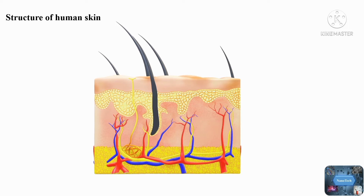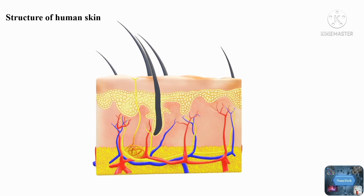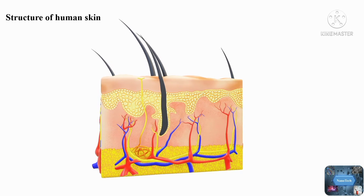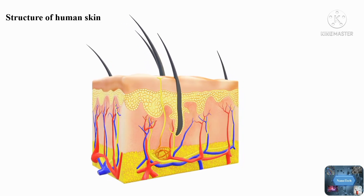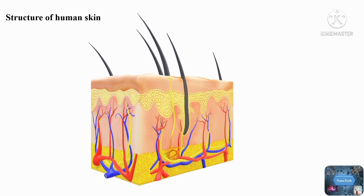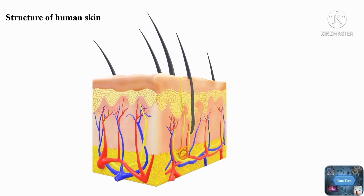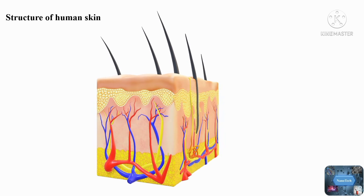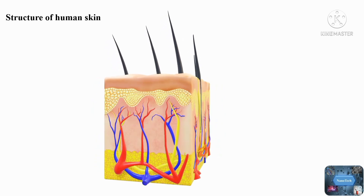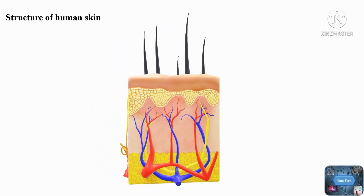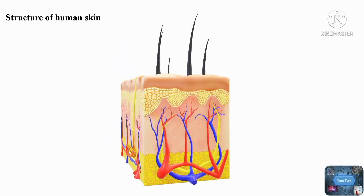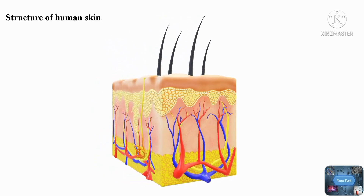The topmost layer is the epidermis. The epidermis is further subdivided into five layers: the stratum corneum, the stratum lucidum, the stratum granulosum, the stratum spinosum, and the stratum germinativum.